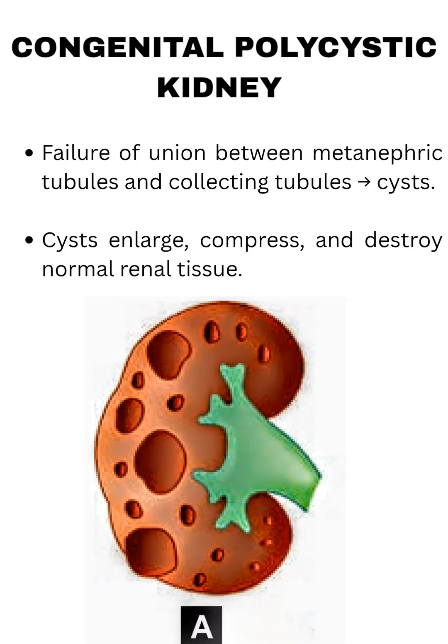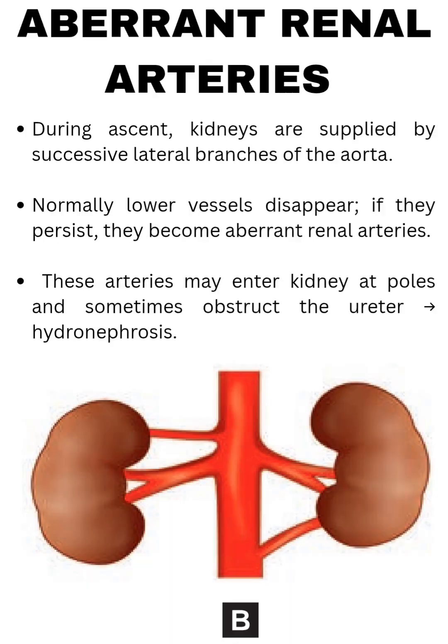Congenital polycystic kidney: failure of union between metanephric tubules and collecting tubules forms cysts. The cysts enlarge, compress, and destroy normal renal tissue.